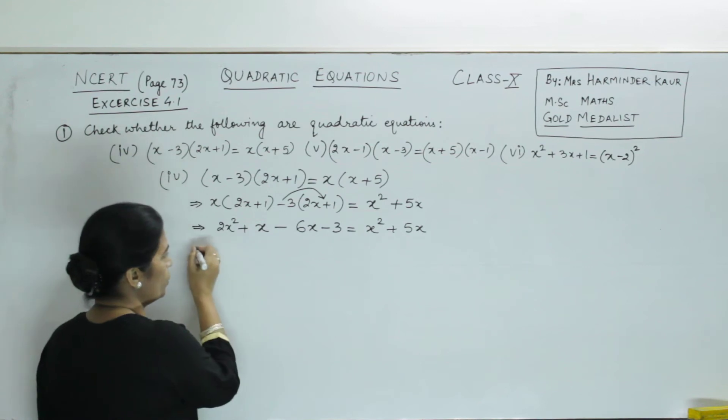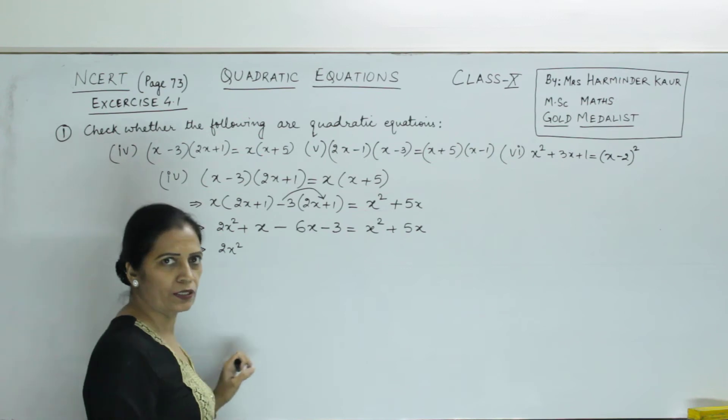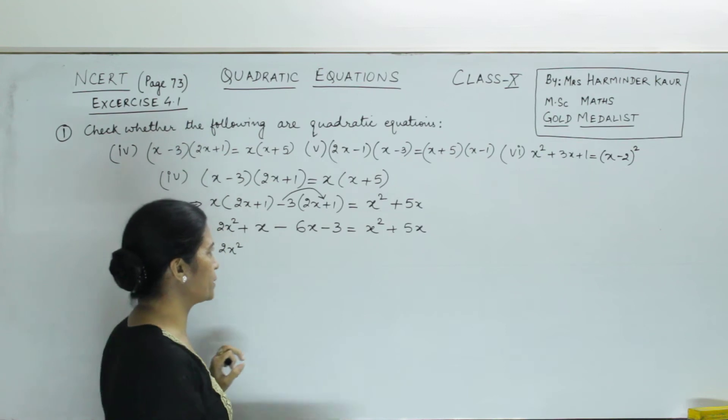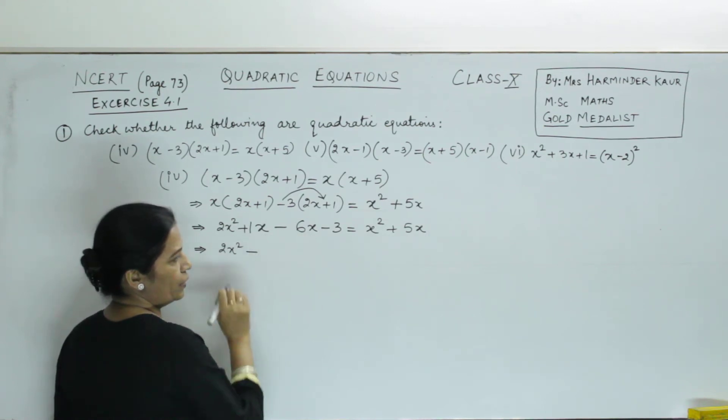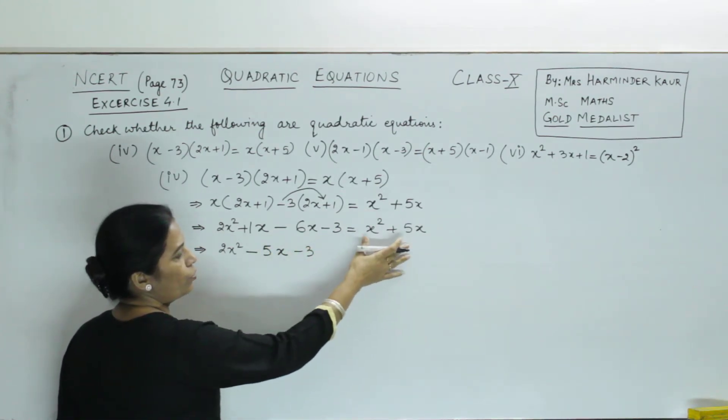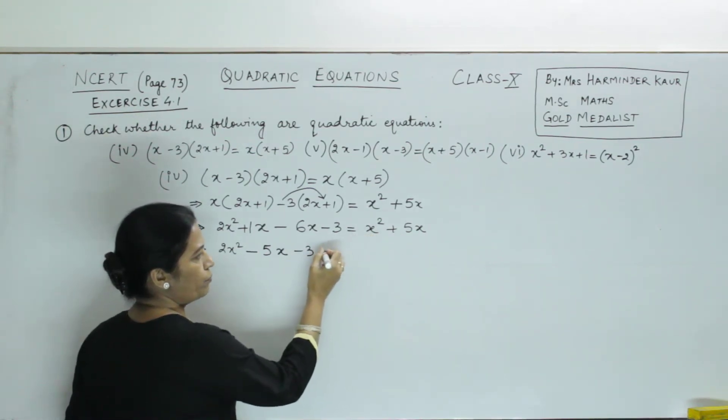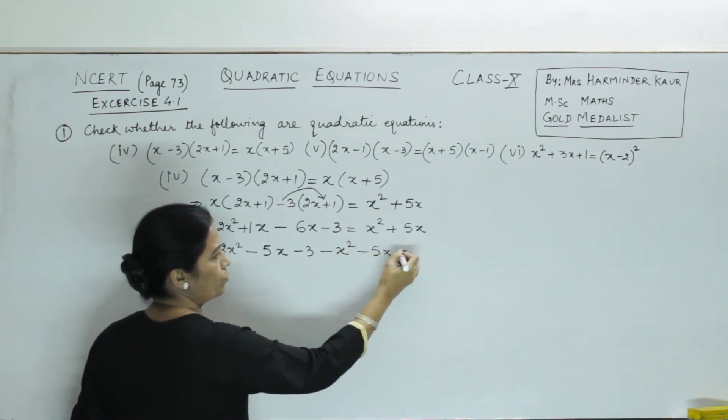Remember, minus into plus will be minus. So it is minus 3 = x² + 5x. Now, it is 2x² here. Here are x terms. So first, we have to add and subtract. So this is 1x and 6x. Sign of 6 is greater. So we have minus 1 and minus 6. Then it becomes minus 5x. Then minus 3.